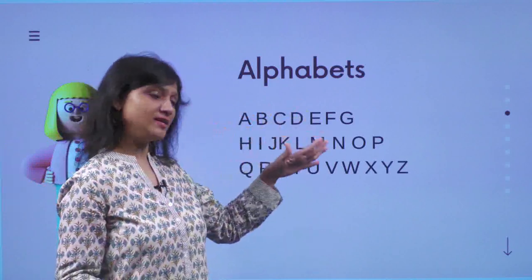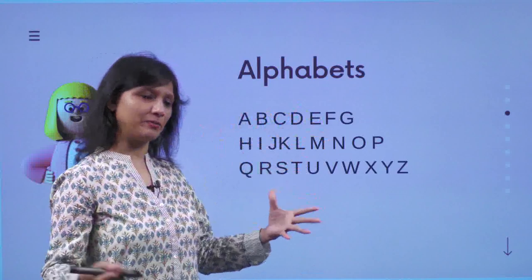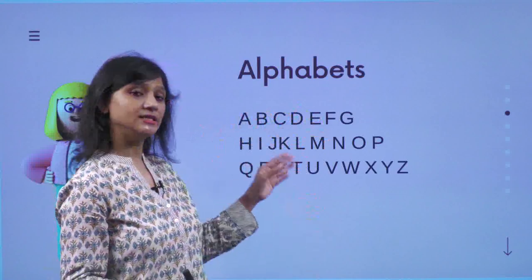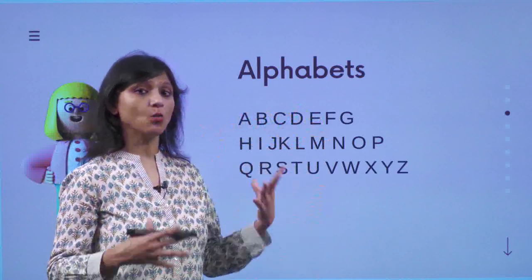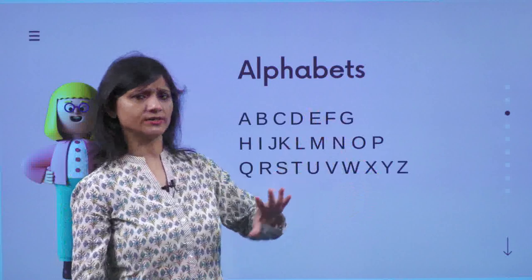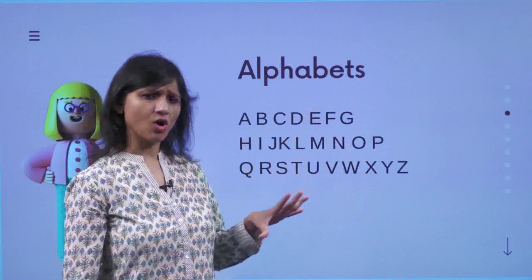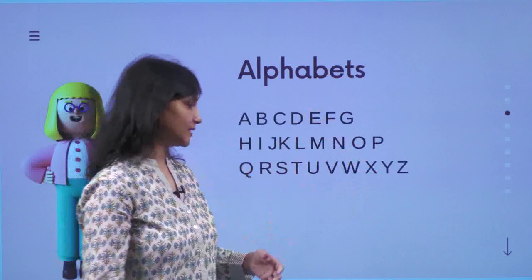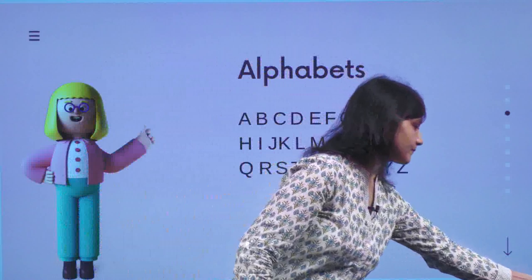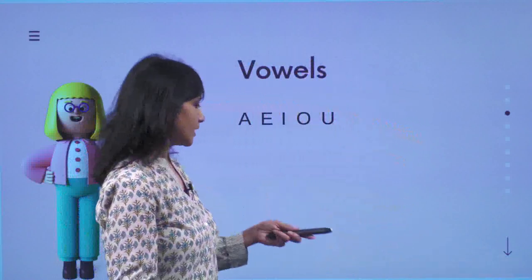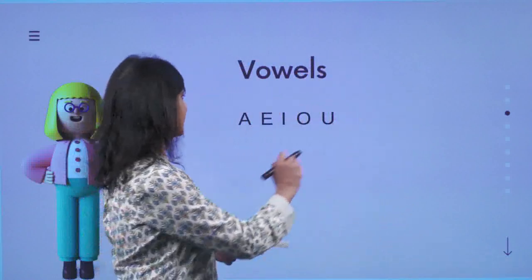A, B, C, D, E, F, G, H, I, J, K, L, M, N, O, P, Q, R, S, T, U, V, W, X, Y, and Z — either Z or Zee. We all know this. So how many alphabets are there? We have got 26 alphabets.